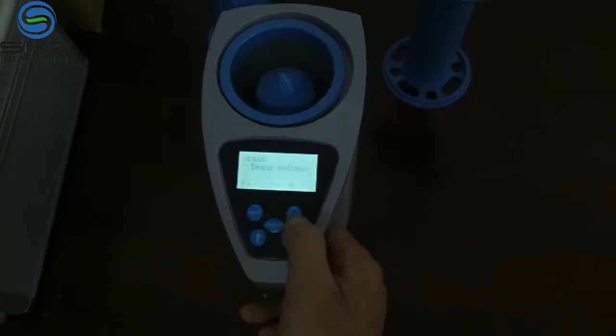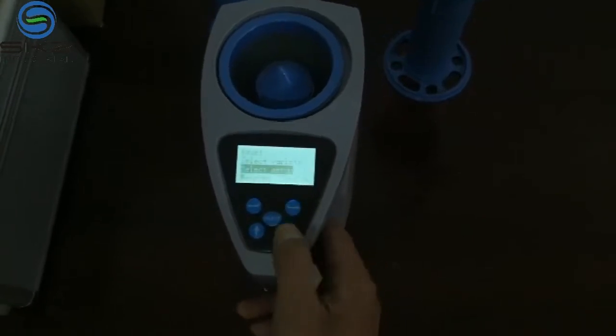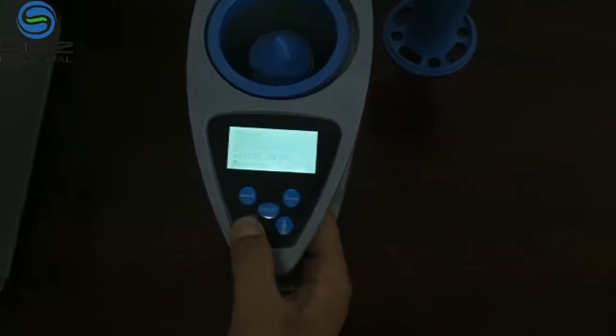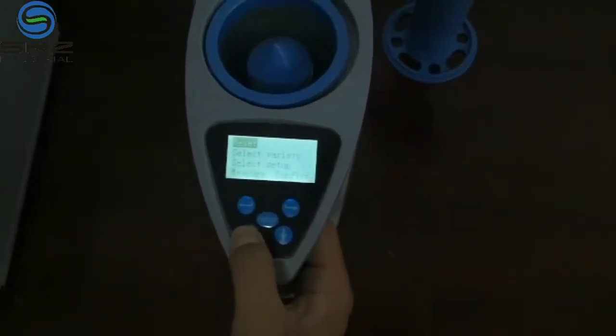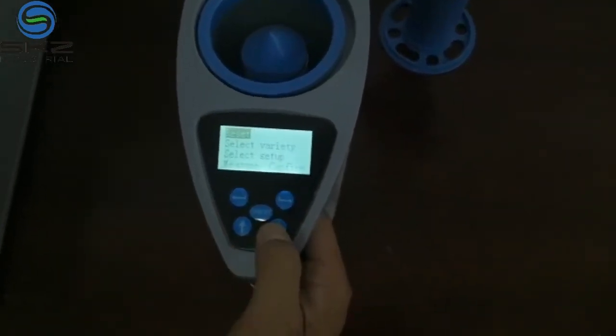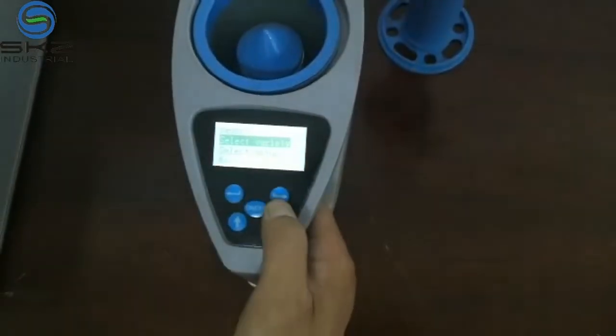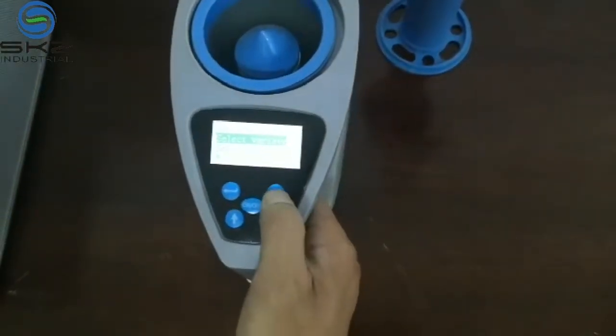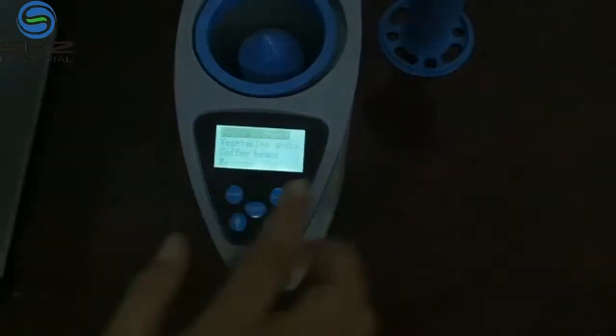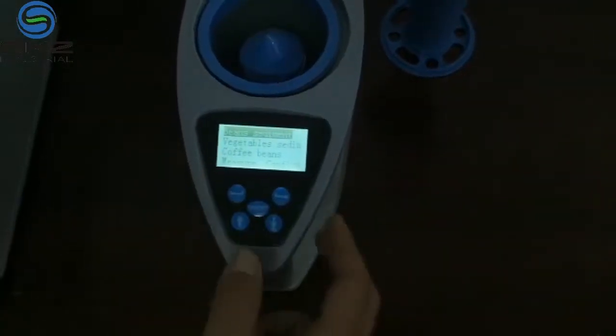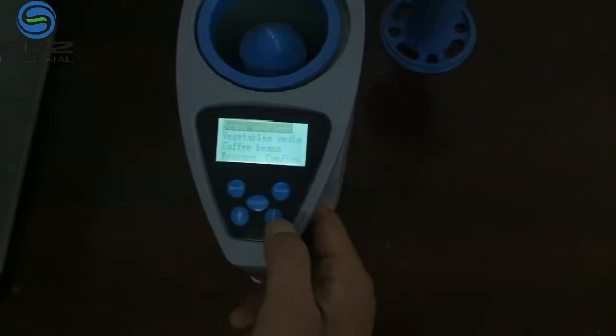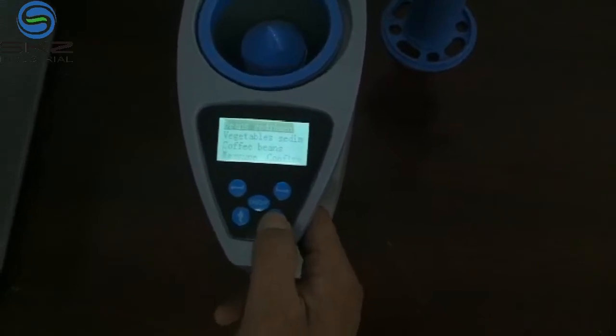First press menu, then select variety. There are 33 materials total. Now we select coffee bean.